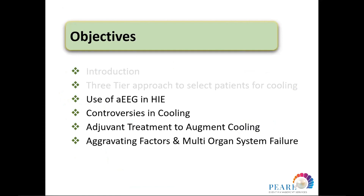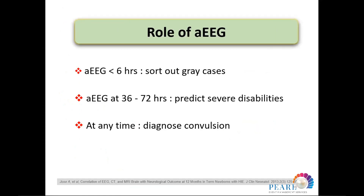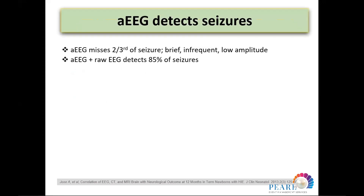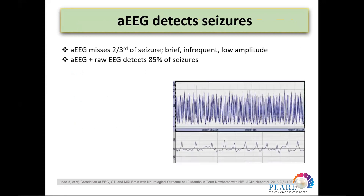The amplitude-integrated EEG in HIE is used not only to sort out gray cases, but also to predict future disability risk, counsel parents, and assist in decision-making. Importantly, the aEEG helps detect subclinical seizures. However, aEEG alone is not sufficient — it can miss seizures that are brief, frequent, or of low amplitude. If combined with conventional EEG, the yield reaches up to 85% of seizures detected.